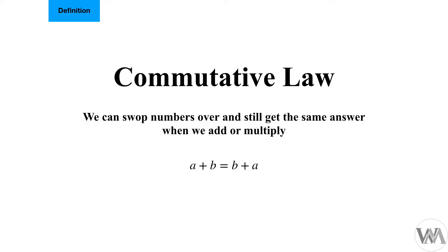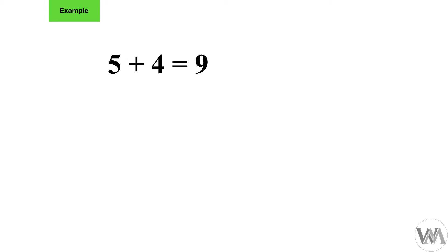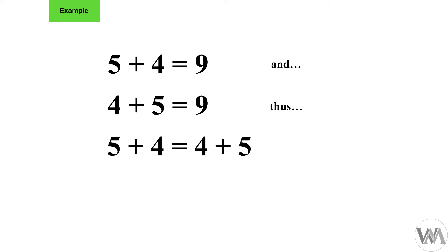We can swap those numbers around. So if a plus b — where a and b can be any number — let's say a was five and b was two, then five plus two will equal b plus a, or two plus five. Swapping the five with the two and the two with the five will get us the same result. For example, five plus four equals nine, and four plus five also equals nine. Thus five plus four equals four plus five, because both equal nine.